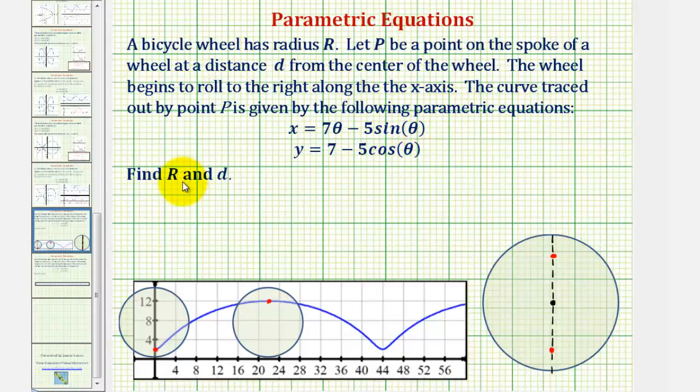We want to find r, which is the radius of the bicycle wheel, and d, the distance the point on a spoke is from the center of the wheel.